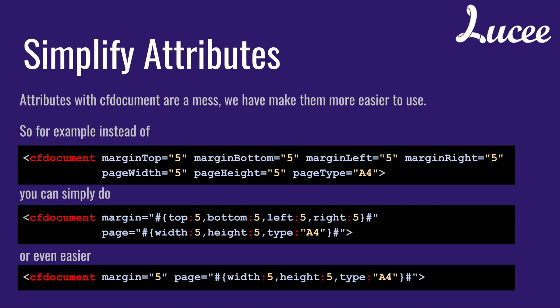We also simplified the attributes. For example, with cfdocument you have the attributes margin-top, margin-bottom, margin-left, and so on. In our view that's horrible to have four attributes that address more or less the same thing. So in addition we added the attribute margin, where you simply can define a value for top, bottom, left, right, and so on. It looks nicer and it's easier to write. Of course you can also just write margin and pass a single value, and that value is used for top, left, right, and bottom.